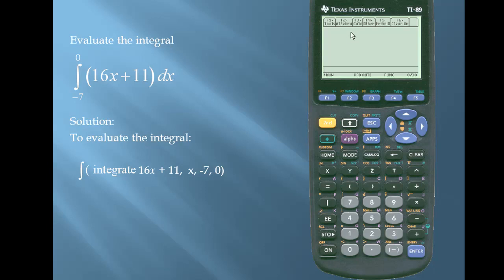For our integrate function, we'll simply press f3. Integrate is our second option. So I'll press enter. I'll enter the function 16x plus 11. I'll insert a comma. The variable of integration is x. The lower limit is negative 7. Insert a comma. The upper limit is 0. I'll end off my integral with an end parenthesis. And we have a value of negative 315.